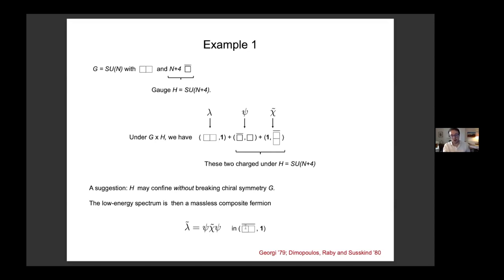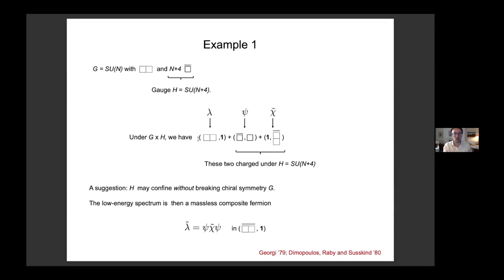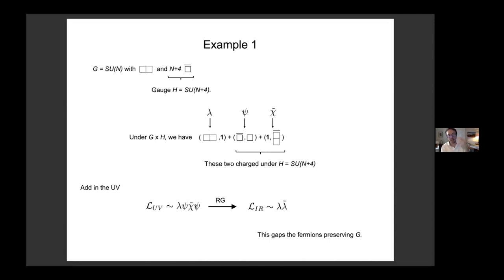The nice thing about this massless composite fermion is that its quantum numbers are precisely the opposite of what we started with for Lambda — Lambda just wasn't playing a role in this story. In other words, if you go back to your theory and add in the UV the following four-fermion term, it's invariant under G. You think it's an irrelevant operator because it's a four-fermion term, but it's actually an example of a dangerously irrelevant operator. It's irrelevant in the UV, but as you flow under RG, strong coupling dynamics kick in and change the dimension of this operator from irrelevant to relevant — specifically it becomes a mass term.